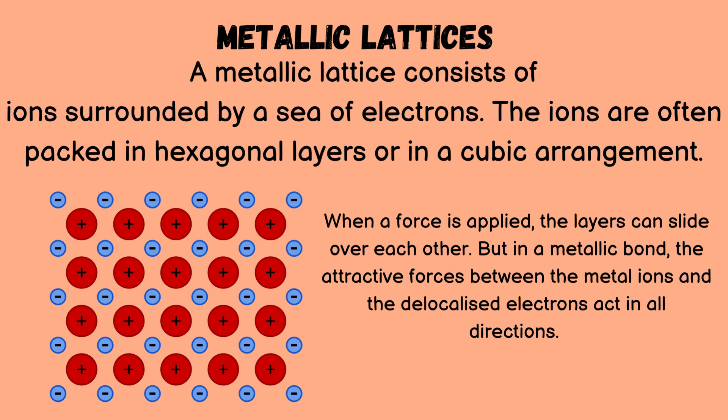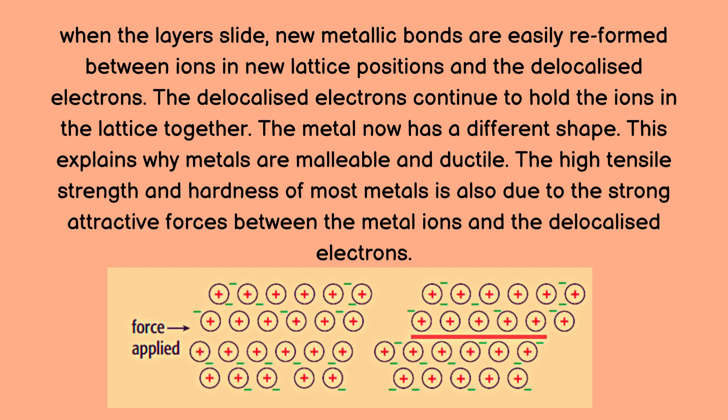The next type of lattice is the metallic lattice, which consists of ions surrounded by a sea of electrons. The ions are often packed in hexagonal layers or in a cubic arrangement. When a force is applied, the layers can slide over each other, but in a metallic bond, the attractive forces between the metal ions and the delocalized electrons act in all directions. When the layers slide, new metallic bonds are easily re-formed between ions in new lattice positions and the delocalized electrons.